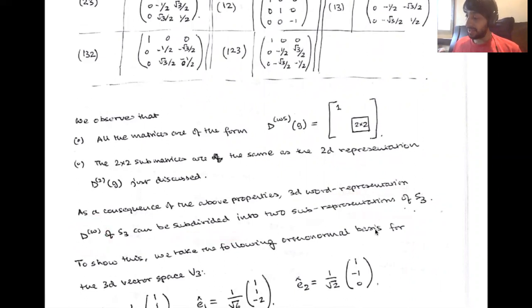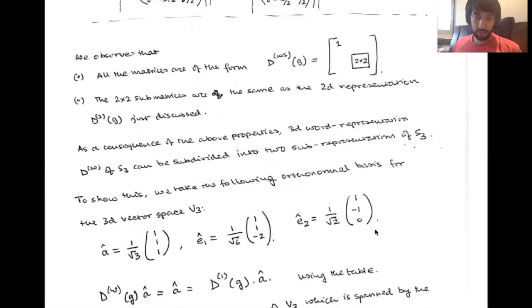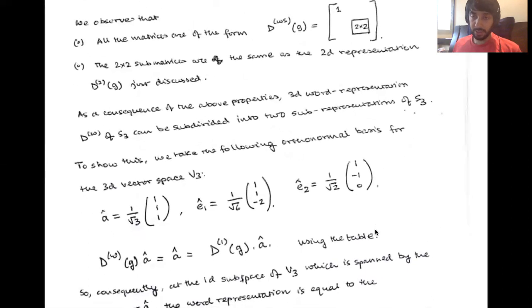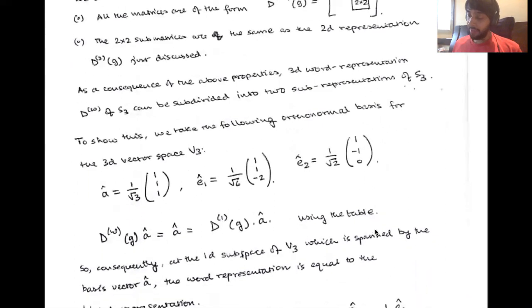One sub-representation is simply the one-dimensional trivial representation, and then there's this 2×2 block. To show this more explicitly, we'll take the following orthonormal basis for this three-dimensional vector space V3. We have A as this vector, E1 as this, and E2 as this.